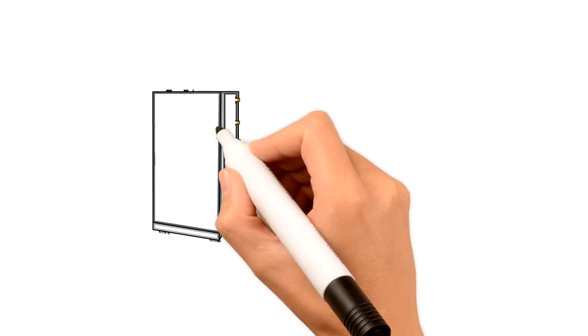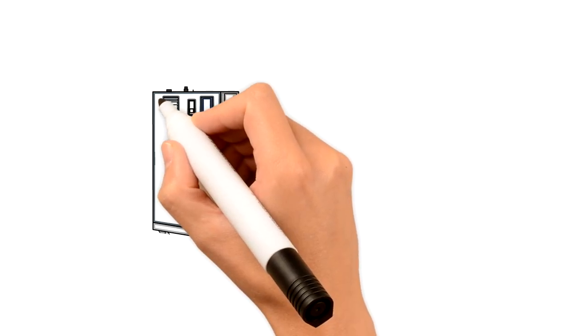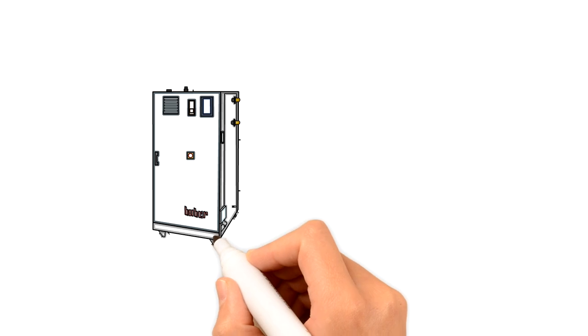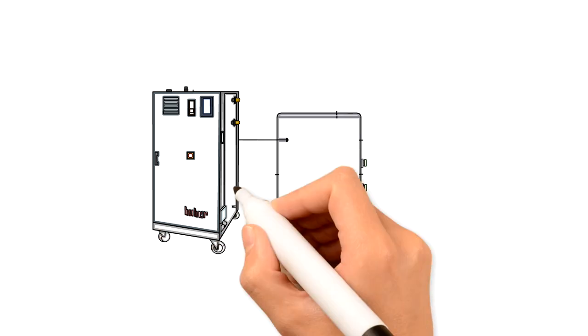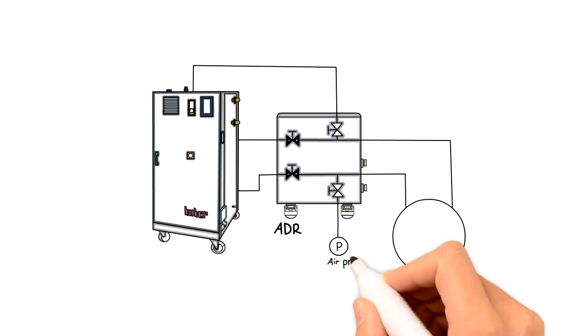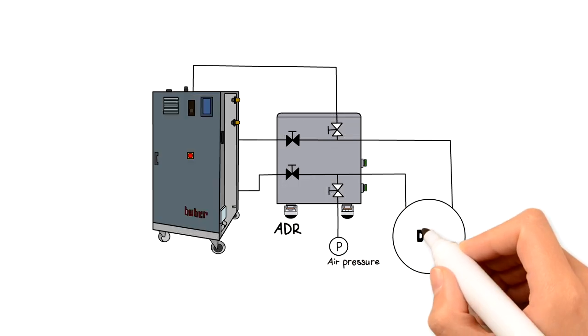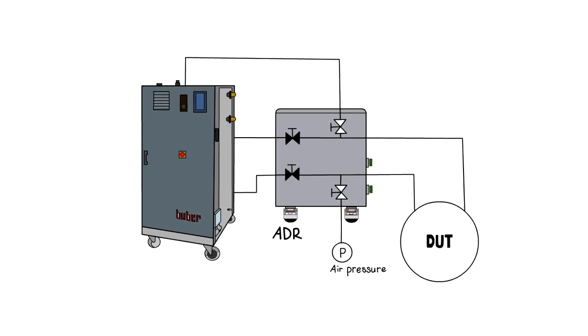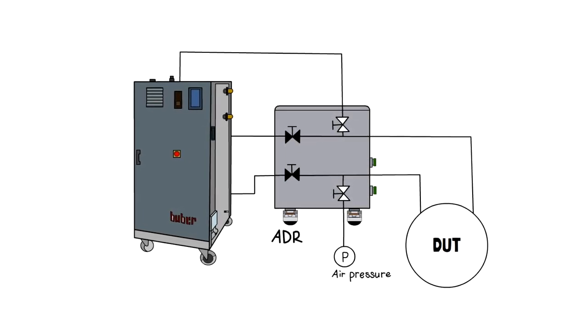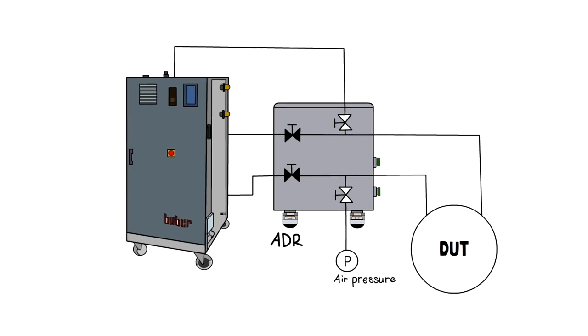Unimotive can do even more. Equipped with the optional automated drain and refill system ADR, the connected application can be drained with compressed air and changed by using quick couplings. The thermal fluid drain from the application is fed back into the temperature control unit and can be reused. The ADR solution thus saves time and money and protects the environment at the same time.